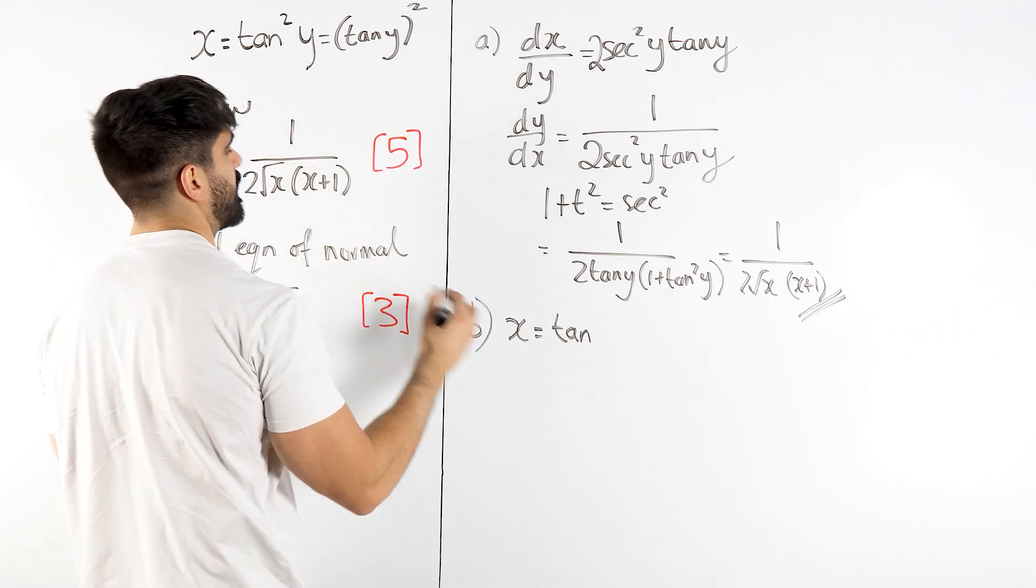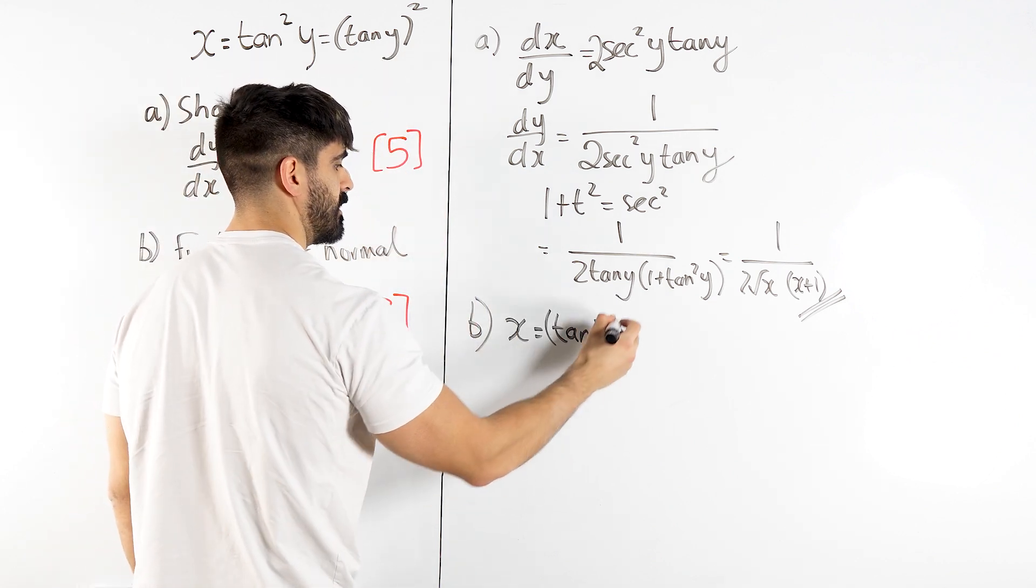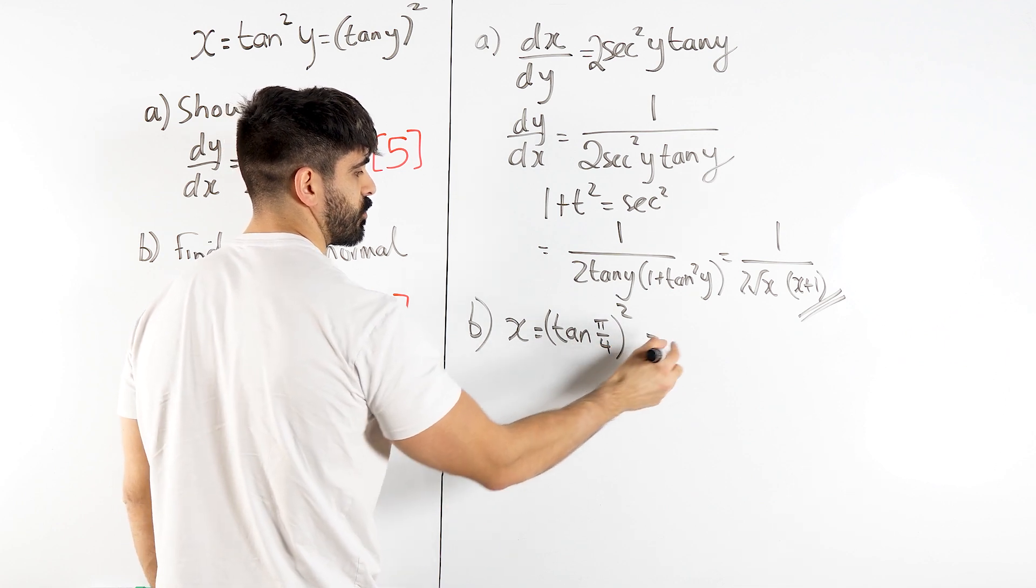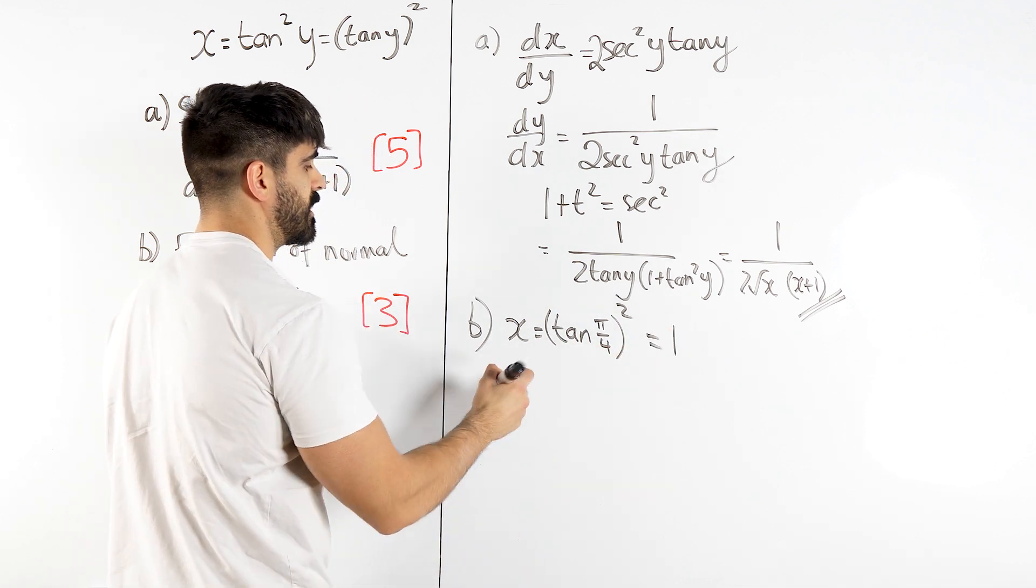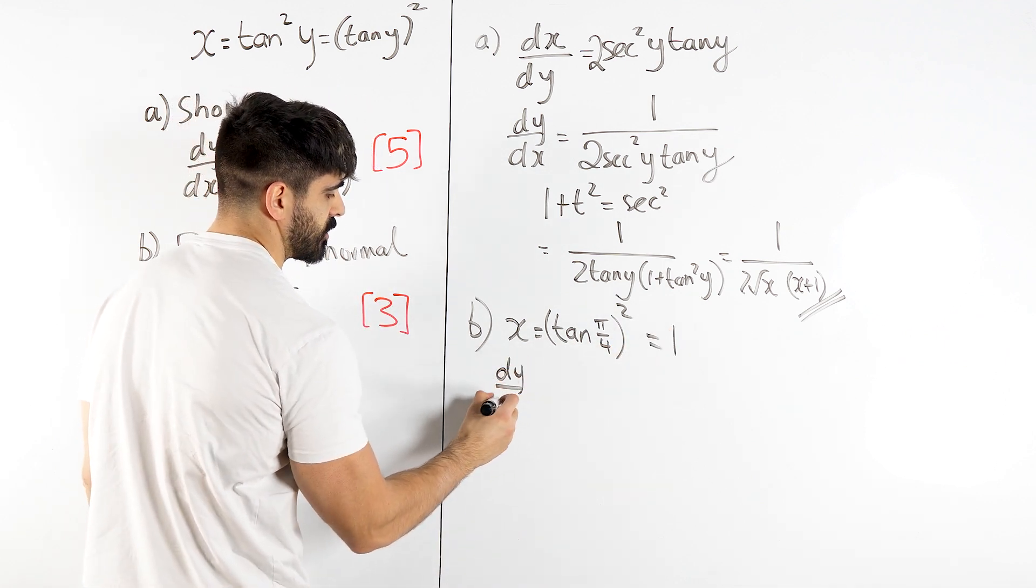I actually like writing it like this, because that's how you would type in the calculator. If you are going to use the calculator for this, this is just 1. Now we need to sub in pi over 4 into the gradient.